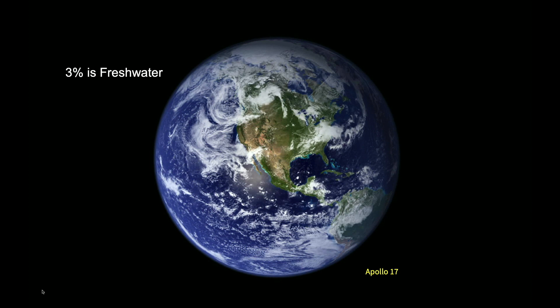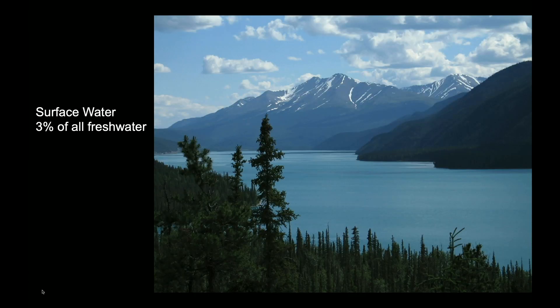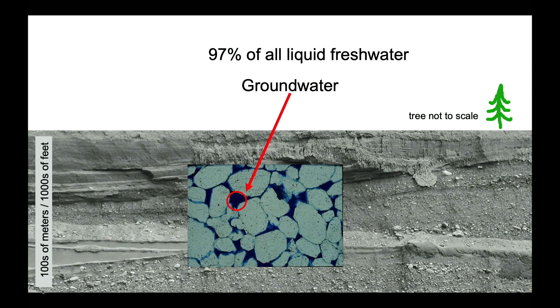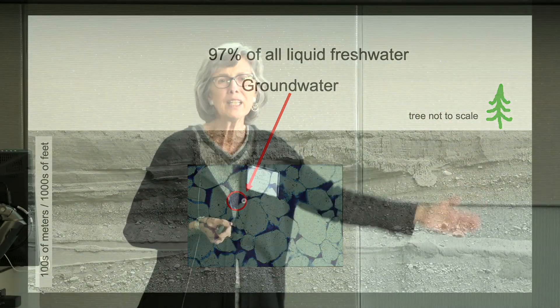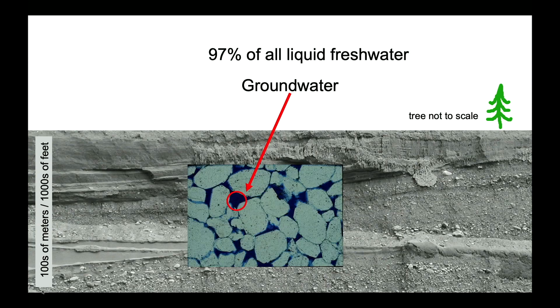Only 3% of Earth's water is freshwater, and of that 3%, only 3% is surface water. So 97% — and this is a schematic I use a lot, the tree is not to scale — is groundwater, typically found hundreds to thousands of meters below the ground surface. It's that water held in the openings in rocks and sediments below the ground surface, and it is 97% of the freshwater on our planet.